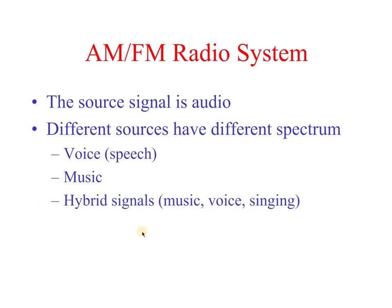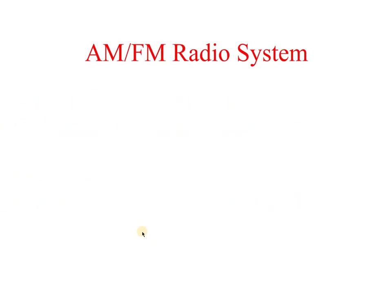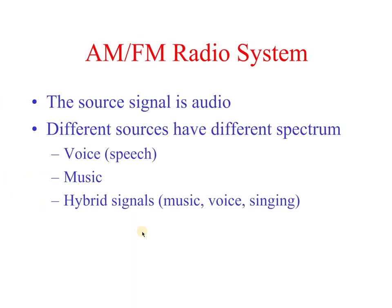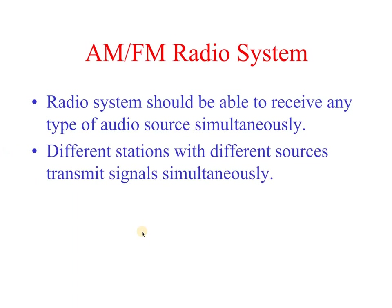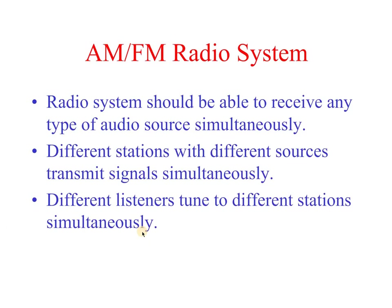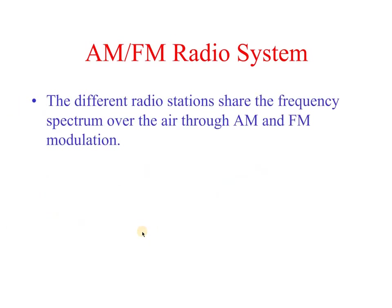The source signal is audio in AM and FM radio systems. Different sources have different spectra — voice and music are hybrid signals which occupy different frequencies. The radio system should be able to receive any type of audio source simultaneously. Different stations with different sources transmit signals simultaneously, and different listeners tune to different stations simultaneously.